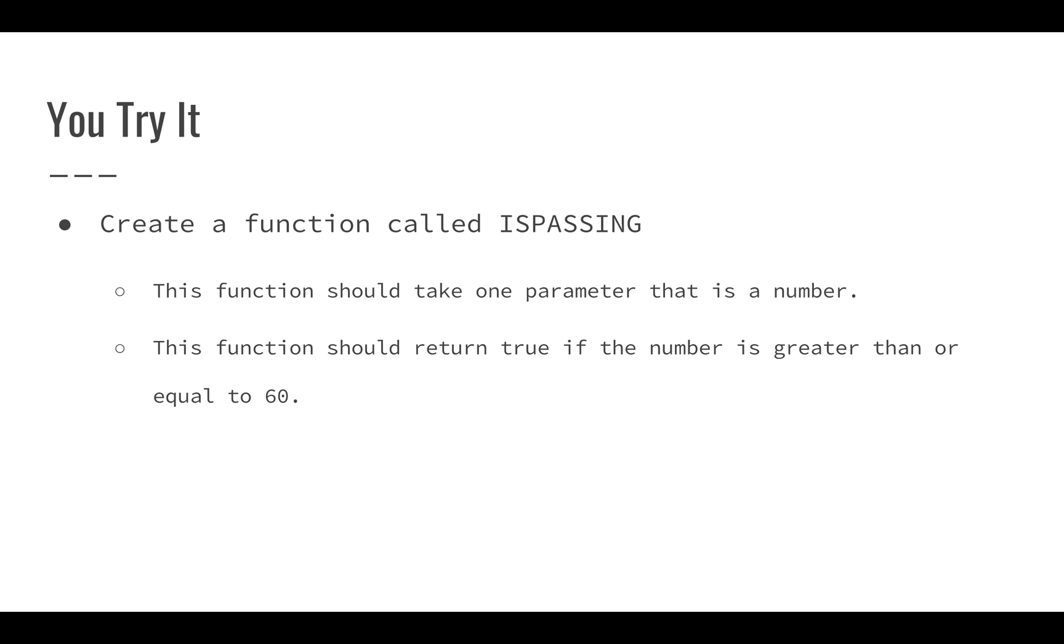The next function is something called ISPASSING. Basically, this function should take one parameter, and that parameter will be a number. This function should return true if the number is greater than or equal to 60. So think about how you might evaluate the parameter and think about what you might want to return here and how you can evaluate if it's greater than or equal to 60.